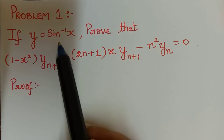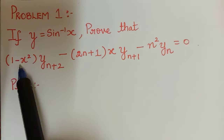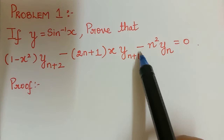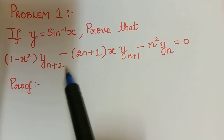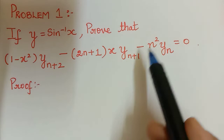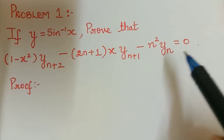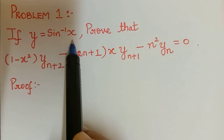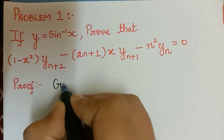Hello students. It is given that y is equal to sin inverse of x. They are asking us to prove that 1 minus x squared multiplied with y_(n+2) minus 2n+1 multiplied with x·y_(n+1) minus n squared·y_n is equal to 0. Here y_(n+2) represents the (n+2)th derivative of y, y_(n+1) represents the (n+1)th derivative, and y_n represents the nth derivative of y.